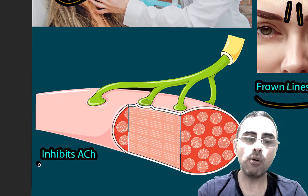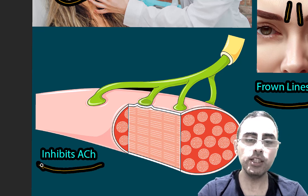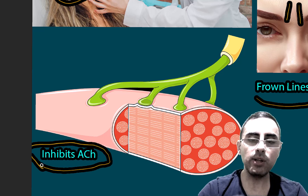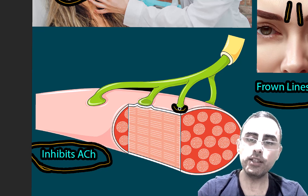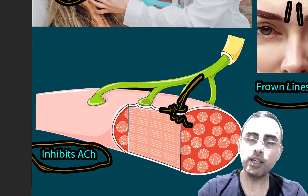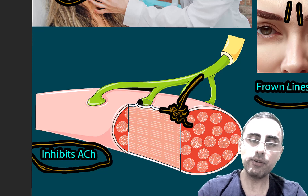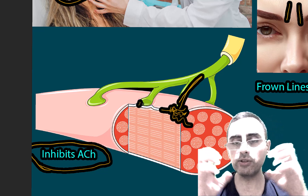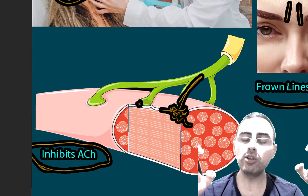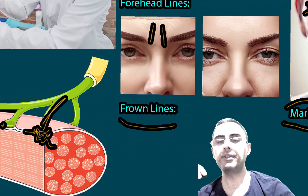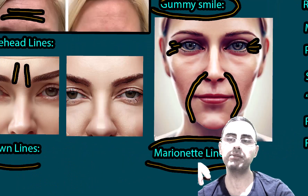The main mechanism of action of Botox — whose main ingredient is botulinum toxin — is inhibition of acetylcholine. Acetylcholine is a neurotransmitter released at the neuromuscular junction between muscle and nerve. It causes muscle contraction, and by inhibiting acetylcholine, that contraction does not happen, which is how Botox reduces wrinkles.